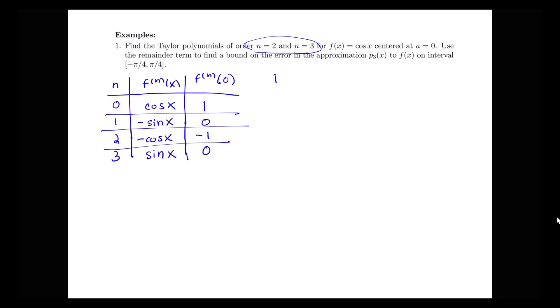So let's write down p2 of x and then p3 of x. So we know that p2 of x is equal to the function at 0 plus the first derivative at 0 times x minus 0 to the first power plus the second derivative at 0 times x squared all over 2 factorial.